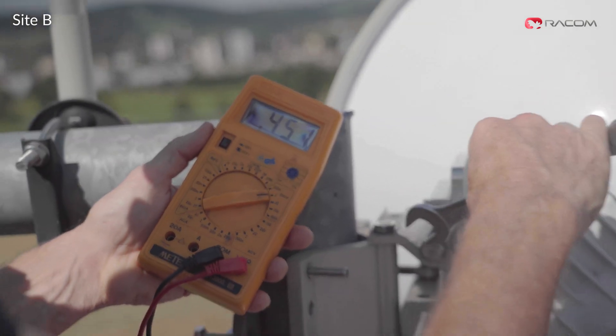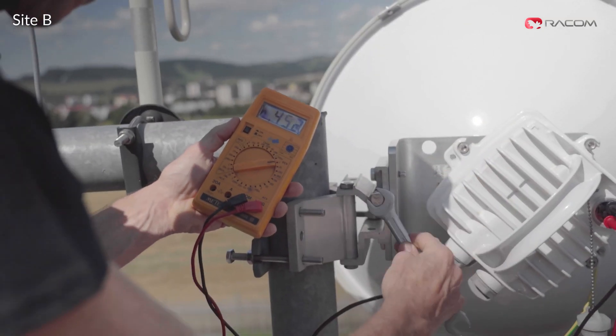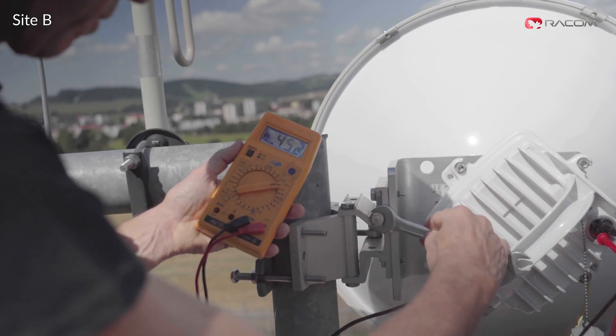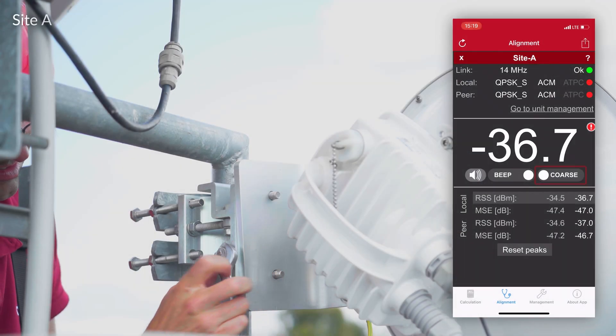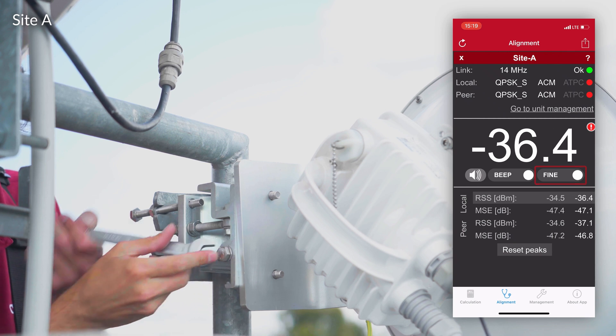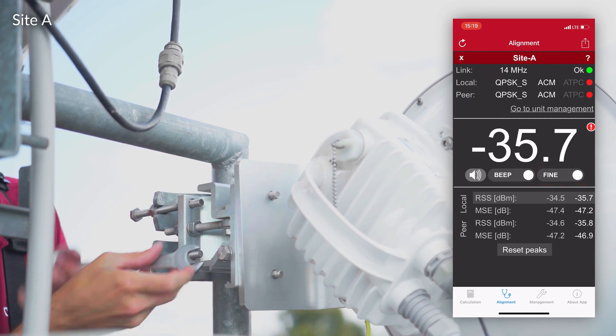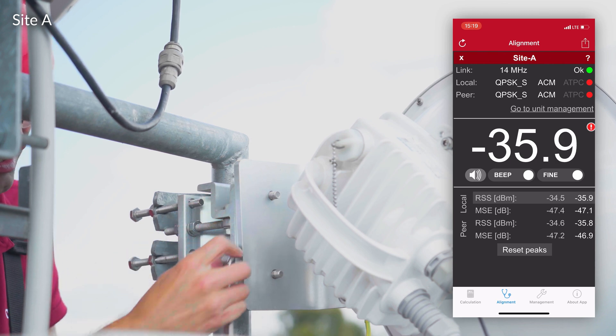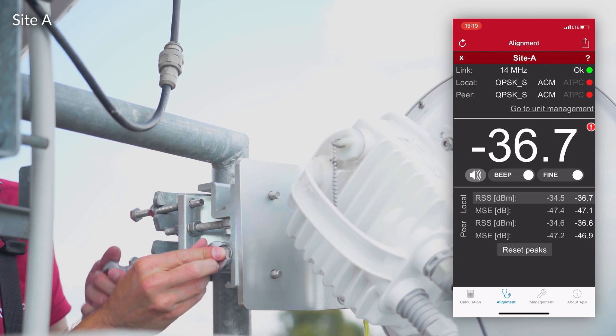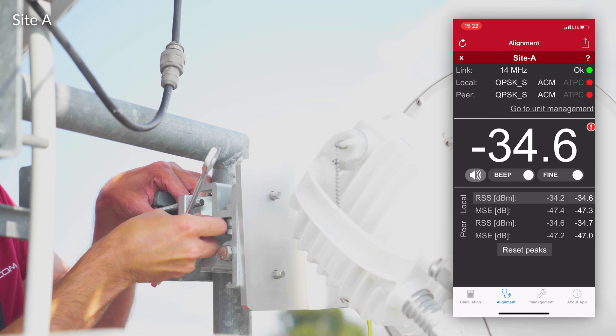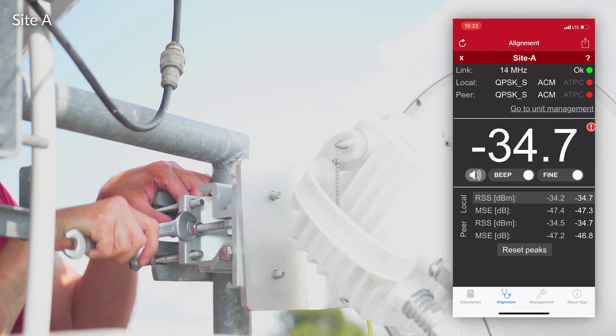Once Jiří has got the best RSS, we will move on to site A for fine alignment. Michal switches coarse setting off and uses the fine adjustment bolt to finish alignment. Make sure to find the main lobe with the best possible RSS because aligning to side lobe results in unstable reception and poor performance.